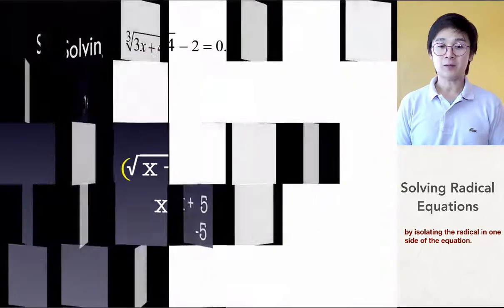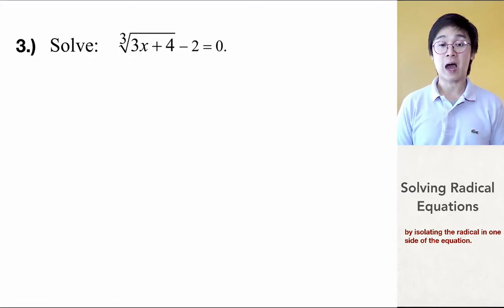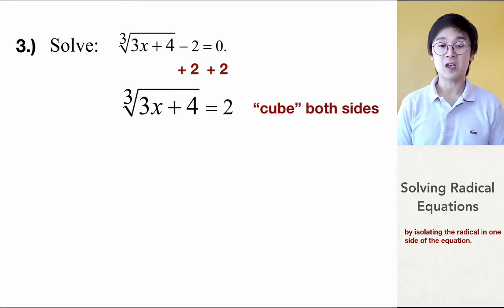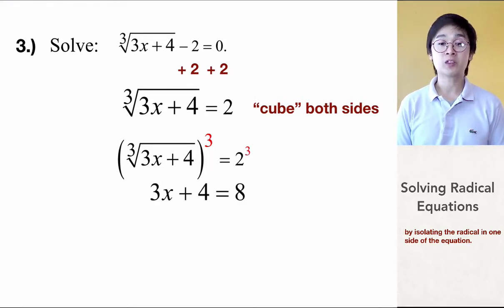Now, for this third set of examples, we have a different root. The previous examples were all square root, but now we have the cube root. You will notice that minus 2, our constant, is still with the radical symbol. So just like before, we need to isolate the radical by adding 2 on both sides. Now that the radical symbol is by itself, we need to get rid of the cube root by cubing both sides, giving us cube root of 3x plus 4 raised to the third power equal to 2 raised to 3. Cubing undoes the cube root, leaving us with 3x plus 4 is equal to 2 cubed, which is 8.